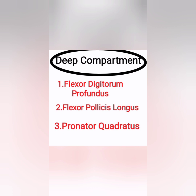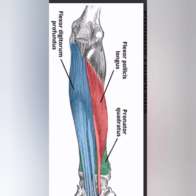Next is the deep compartment group of muscles, which consists of three muscles: flexor digitorum profundus, flexor pollicis longus, and pronator quadratus. Have a look at where these muscles are located, and then we will cover origin, insertion, action, and nerve supply.